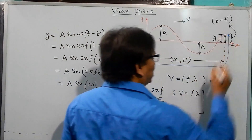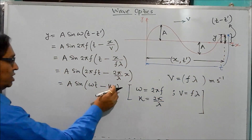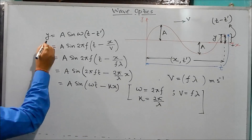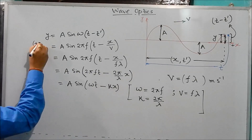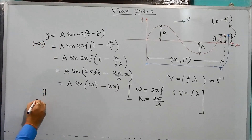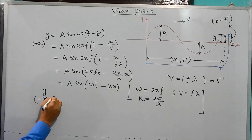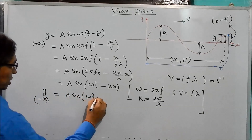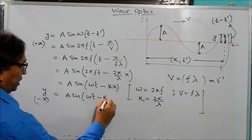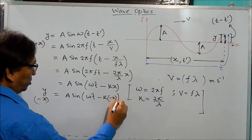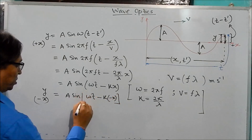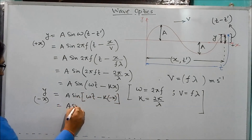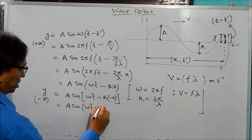If the wave is moving in the minus x-direction, just replace x with minus x. So for a wave moving in the minus x-direction, the equation becomes y = A sin(ωt - k(-x)) = A sin(ωt + kx). The equation y = A sin(ωt - kx) is for a wave moving in the positive x-direction, and y = A sin(ωt + kx) is for a wave moving in the negative x-direction.